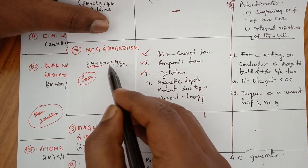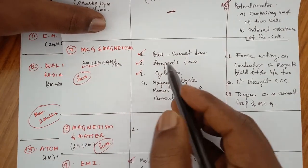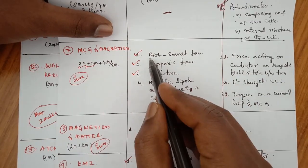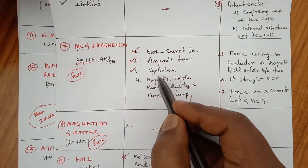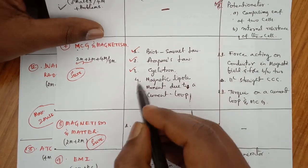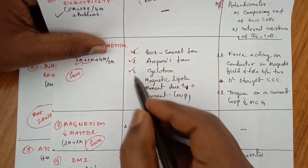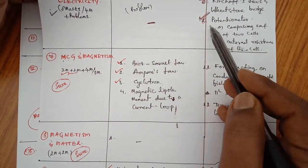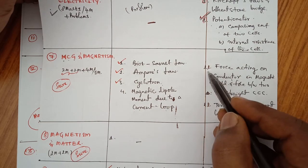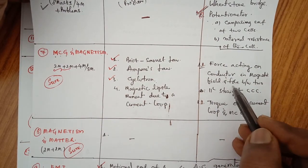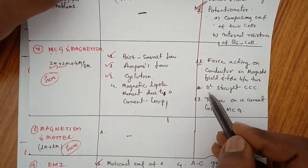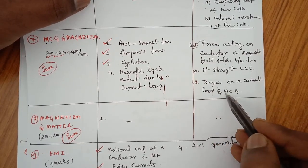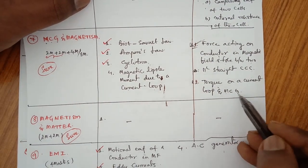For 4 marks from the next chapter (Moving Charges and Magnetism): state and explain Ampere's law; state and explain the Biot-Savart law; third question is the cyclotron — state and explain the working of the cyclotron; fourth question is magnetic dipole moment due to a current loop. The first three are very, very important; the fourth is sometimes important. For 8 marks: force acting on a conductor in a magnetic field and force between two long parallel current-carrying conductors — very, very important. Torque on a current loop and the moving coil galvanometer — explain the working of the moving coil galvanometer. These two 8 marks questions are very, very important; 100% we will get an 8 marks question from this chapter.